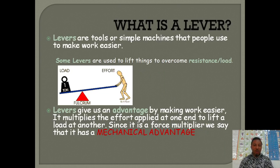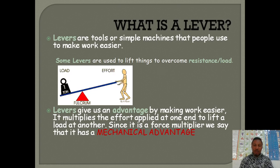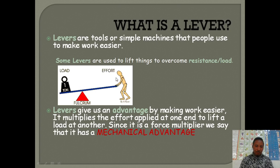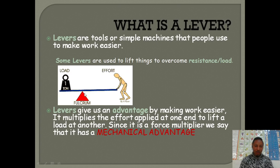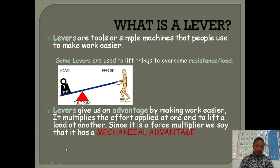Levers are tools, or we can sometimes call them simple machines. All basic tools are simple machines that people use to make work easier. Some levers are used to lift things, to overcome a resistance or load, like what is happening in this picture. The straight bar is supported on a knife edge, fulcrum, or pivot.